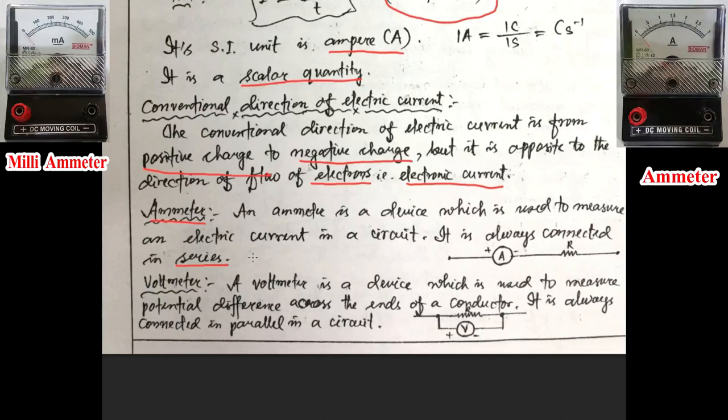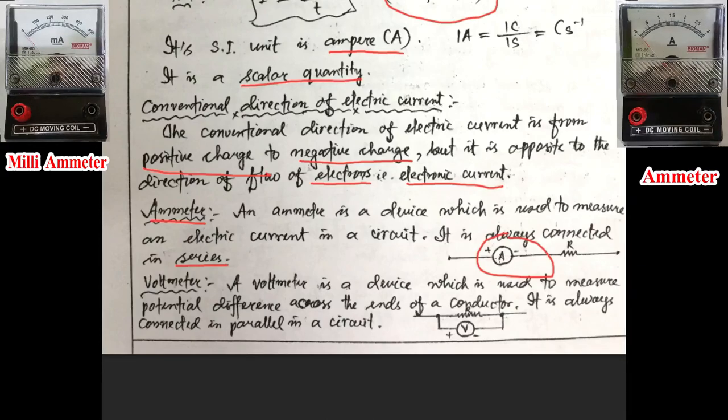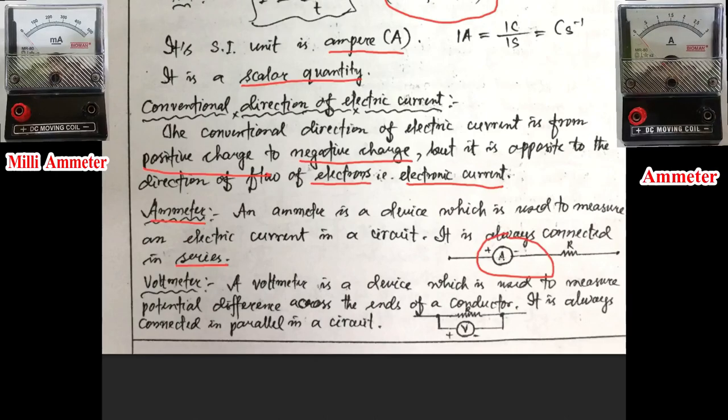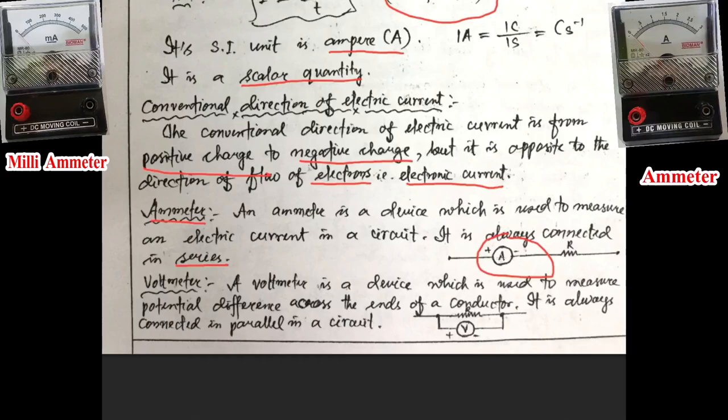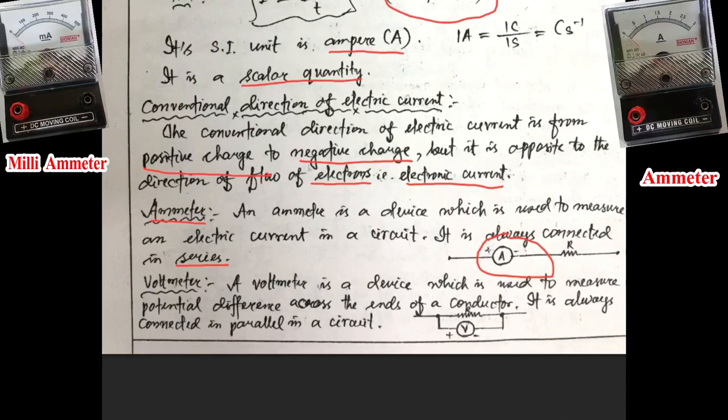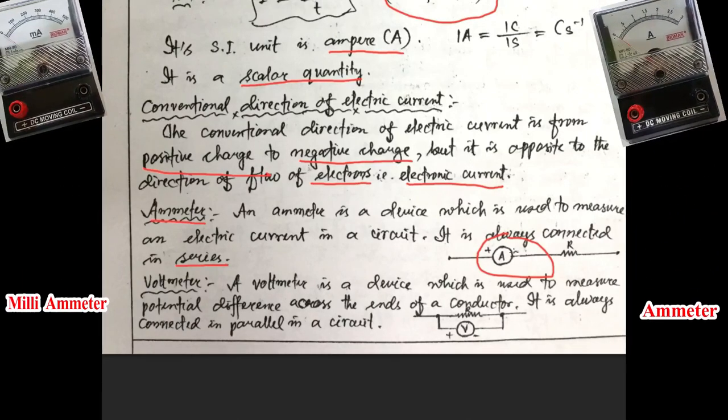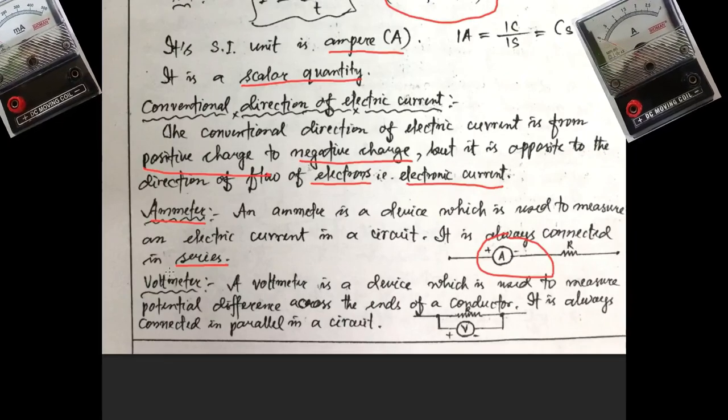You have to note down this point. An Ammeter is always connected in series in an electric circuit. The symbolic form of ammeter is A. Sometimes it may write micro ammeter or maybe milli ammeter or simply A. It has two terminals positive and negative.